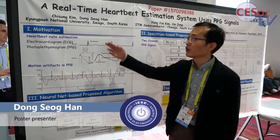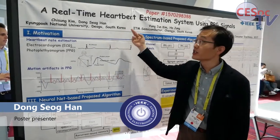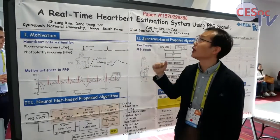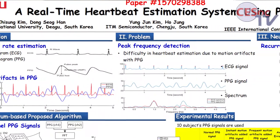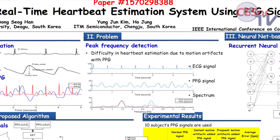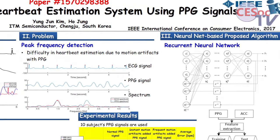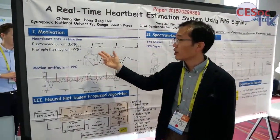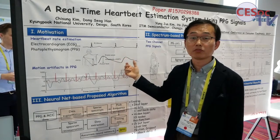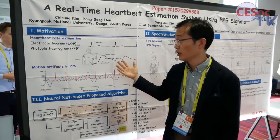Hi, I'm Dong Han from Gyeongbuk National University. This is a real-time heartbeat estimation system using PPG signals. My goal is to detect the correct heartbeat rate in real time.